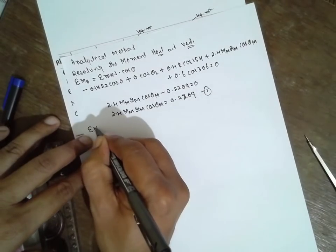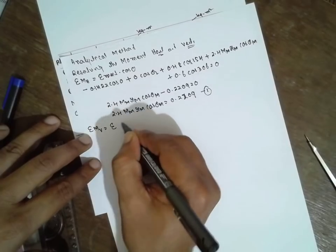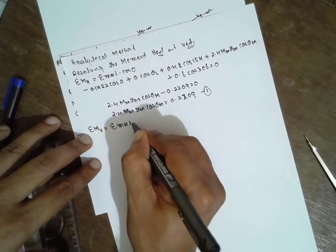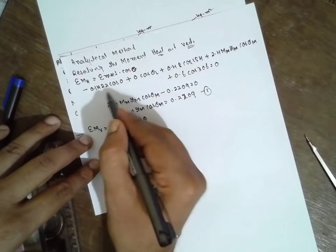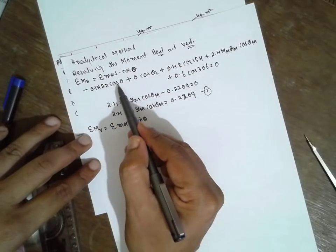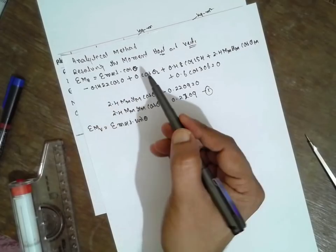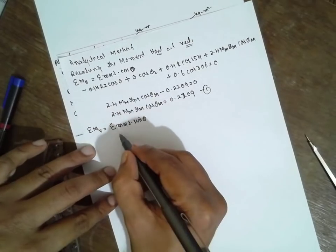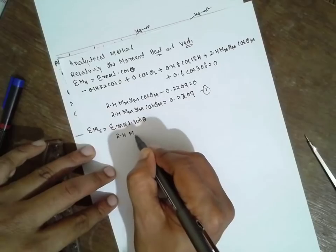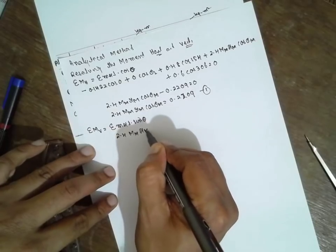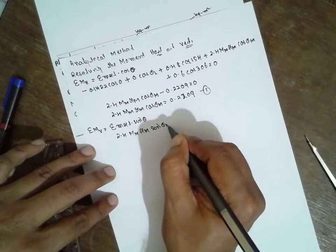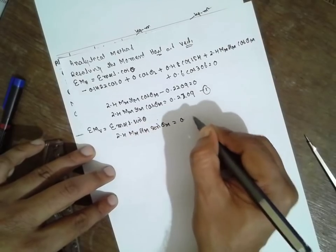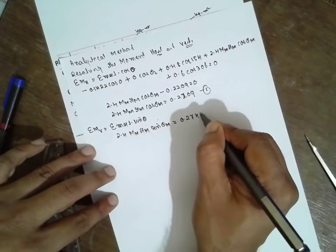Similarly vertically, summation of M R sin theta. Just in place of cos theta, substitute sin theta. You will get the answer as 2.4 MM RM sin theta M equals 0.2749, equation 2.